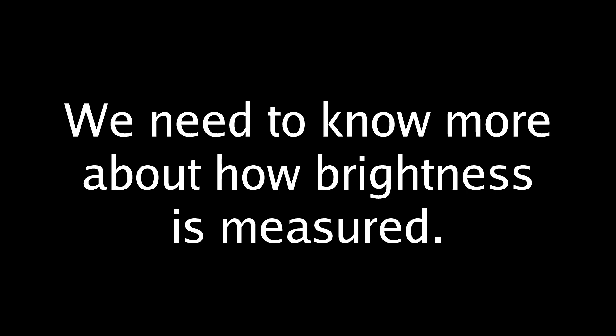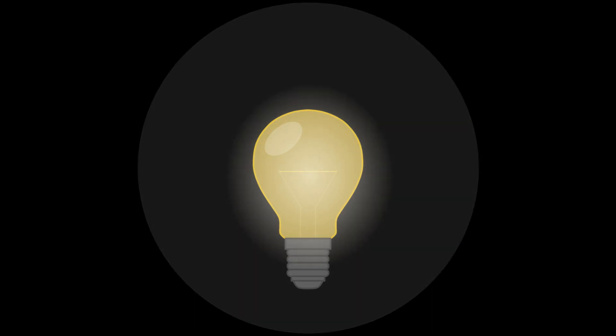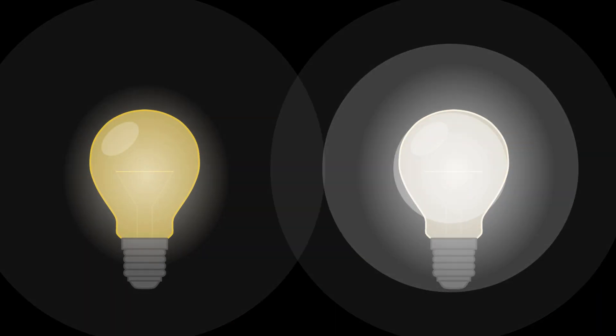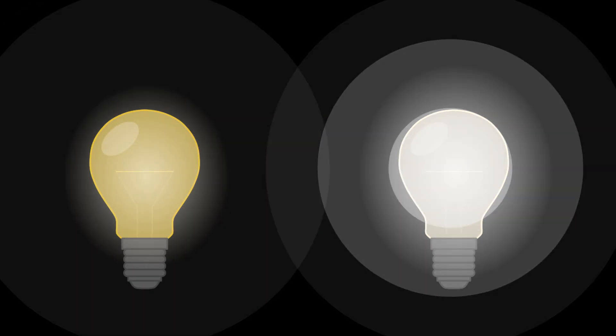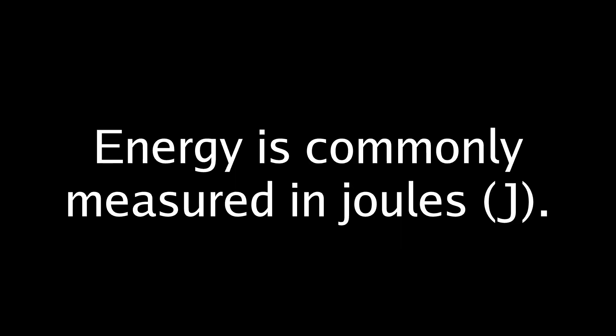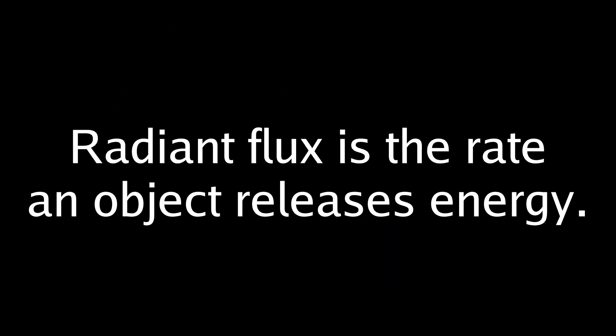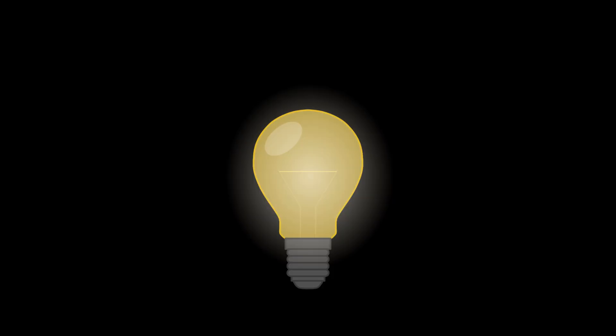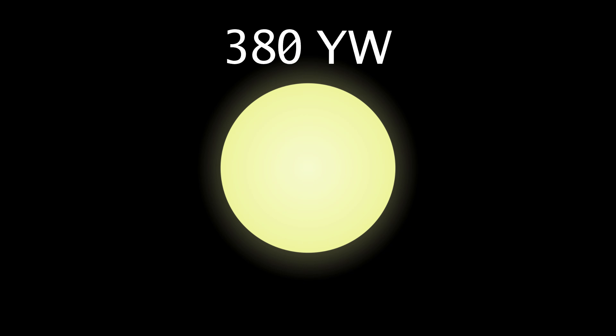How is this even possible? To understand, we need to know a bit more about how brightness is measured. Light contains energy. A brighter object would be releasing energy at a greater rate than a dim object. So we measure the amount of energy an object emits for a given interval of time. Energy is commonly measured in joules. If an object emits light at a rate of 1 joule per second, it has a radiant flux of 1 joule per second. Radiant flux is the rate at which an object releases energy. A light bulb may have a radiant flux of 10 joules per second, also called 10 watts. The sun has a radiant flux of 380 yotta watts, which is 380 septillion watts.